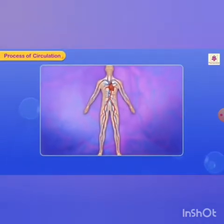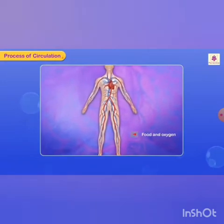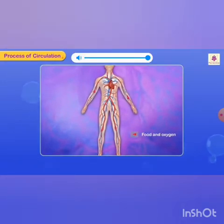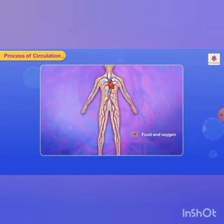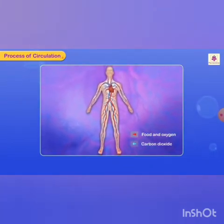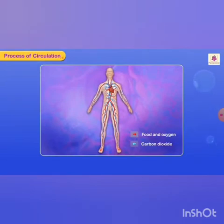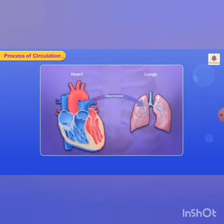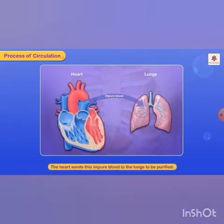Blood carries digested food and oxygen to all parts of your body. It also brings back the waste produced in the cells back to the heart. The heart then sends this impure blood to the lungs to be purified.